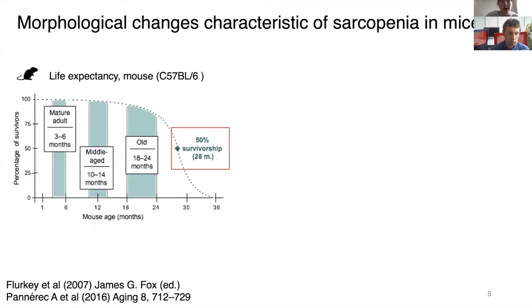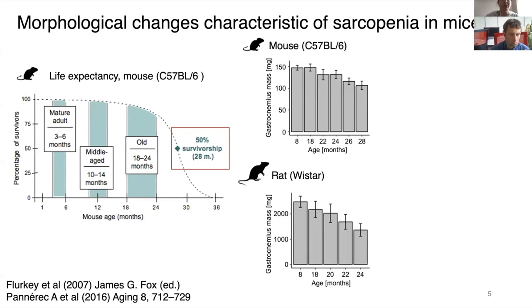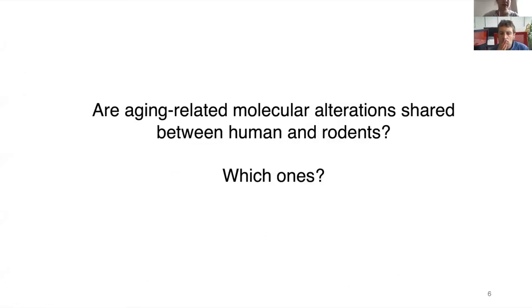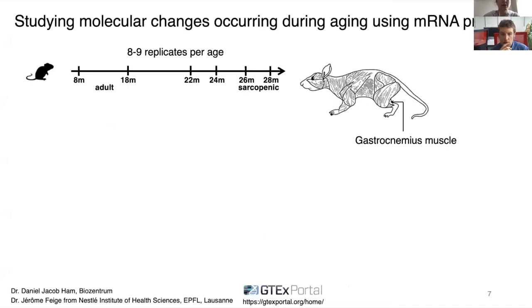Rodents have a much shorter life expectancy of about 28 months and demonstrate morphological changes characteristic of sarcopenia, including decreased muscle mass and decreased grip strength over aging. We asked multiple questions: what are the molecular changes underlying muscle aging in humans and rodents, are these changes shared between species, and if so, which ones?